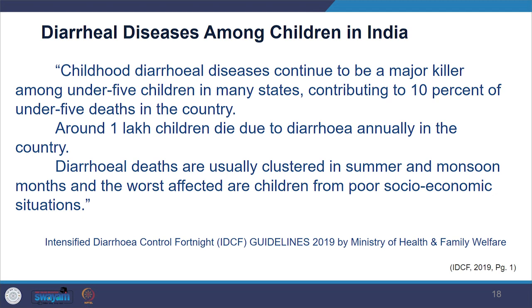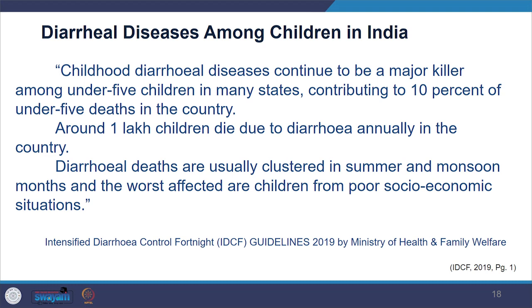For example, nearly 1.7 million people die annually from the very preventable disease of diarrhoea. In India, as per the Intensified Diarrhoea Control Fortnight (IDCF) guidelines 2019 by the Ministry of Health and Family Welfare, childhood diarrhoea diseases continue to be a major killer among under-5 children in many states, contributing to 10 percent of under-5 deaths in the country. Around 1 lakh children die due to diarrhoea annually. Deaths are usually clustered in summer months and the worst affected are children from poor socio-economic situations.